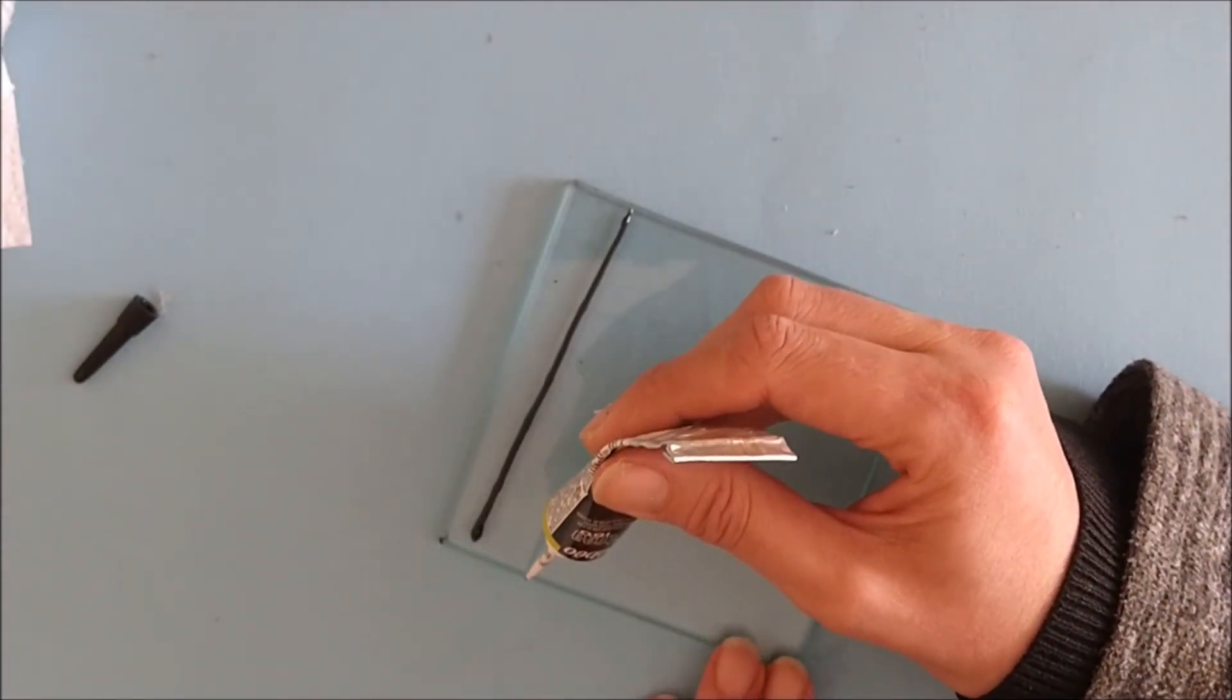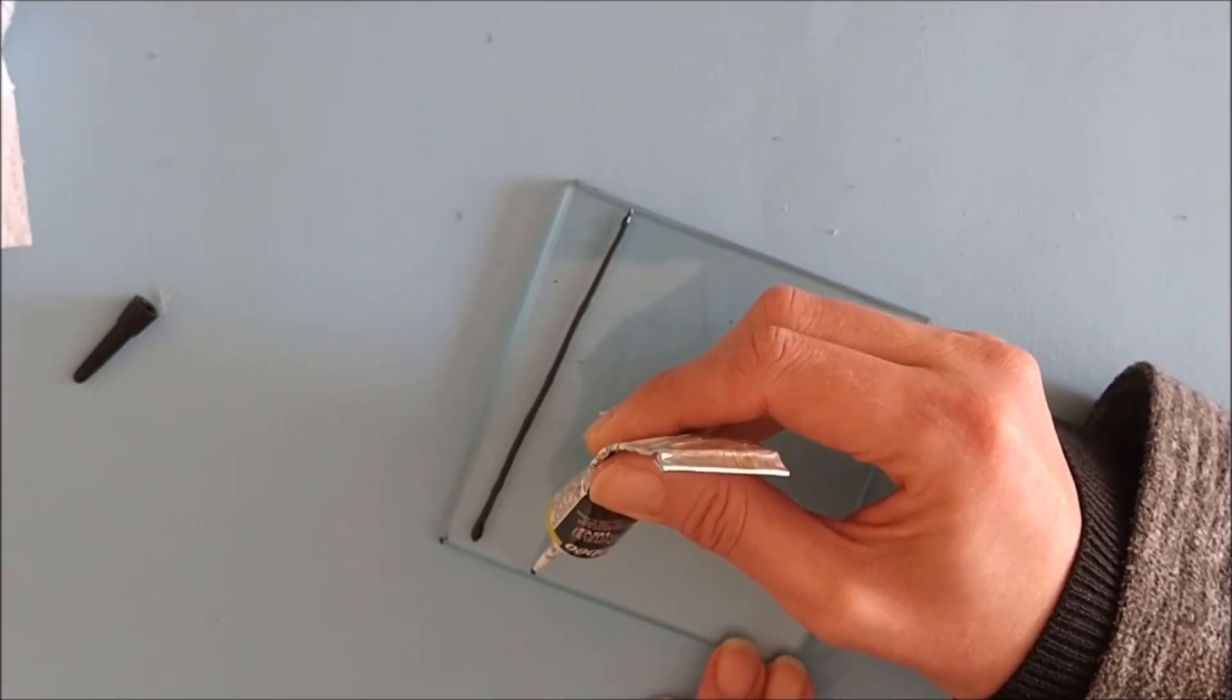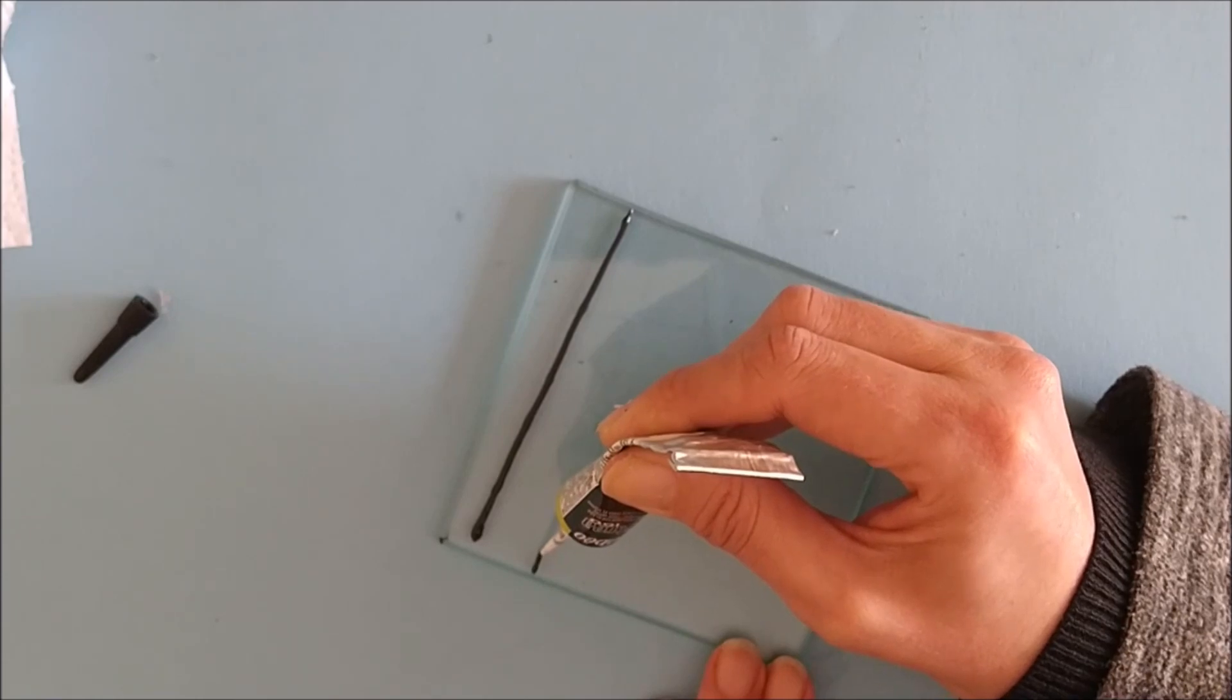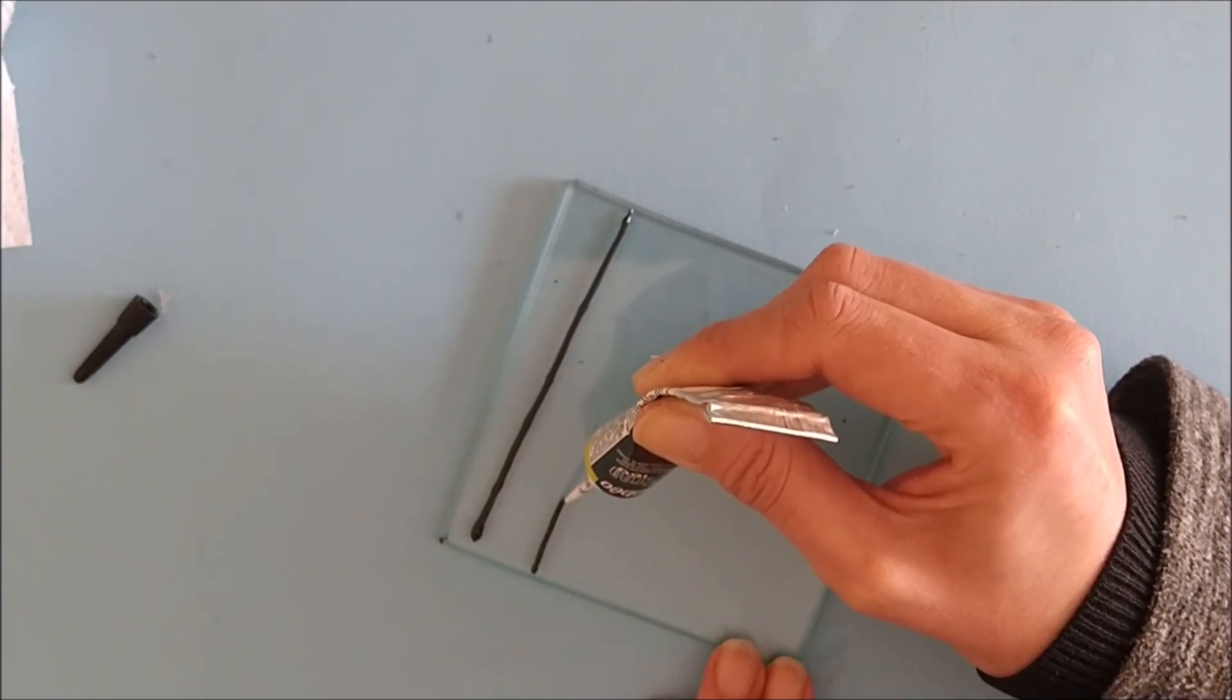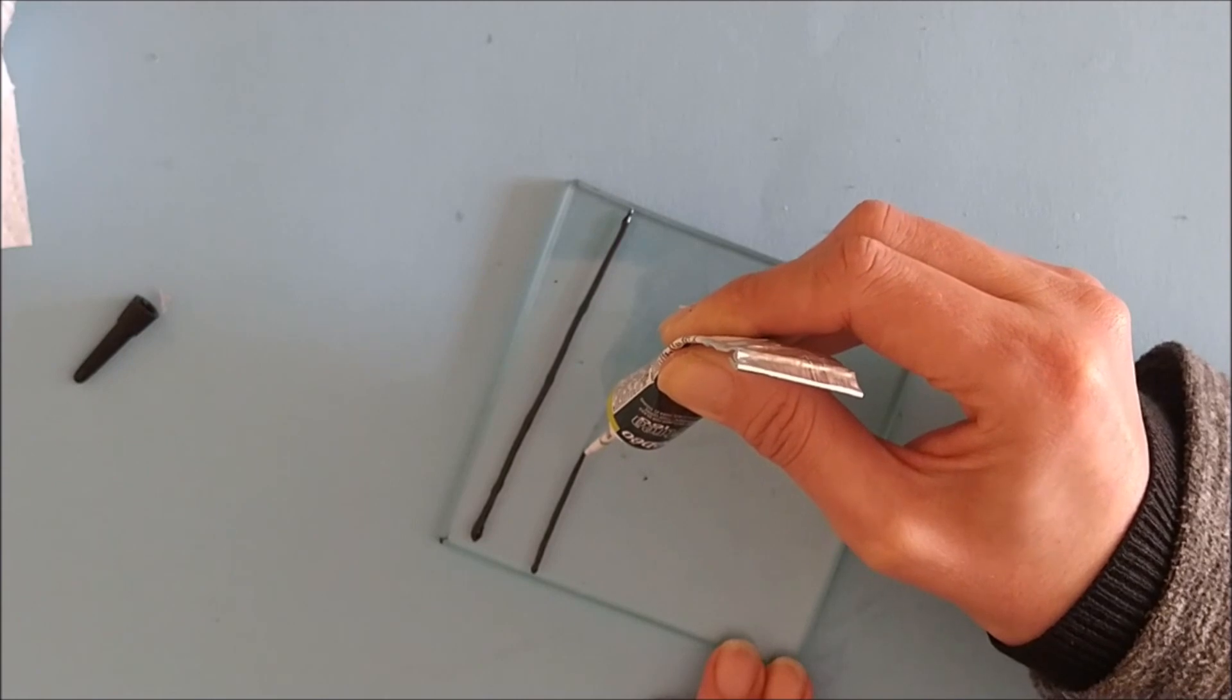If you make a mistake and you want to start the whole project again, if the outliner is still wet you can just wash the project in the sink and dry off your glass and it'll be fine.